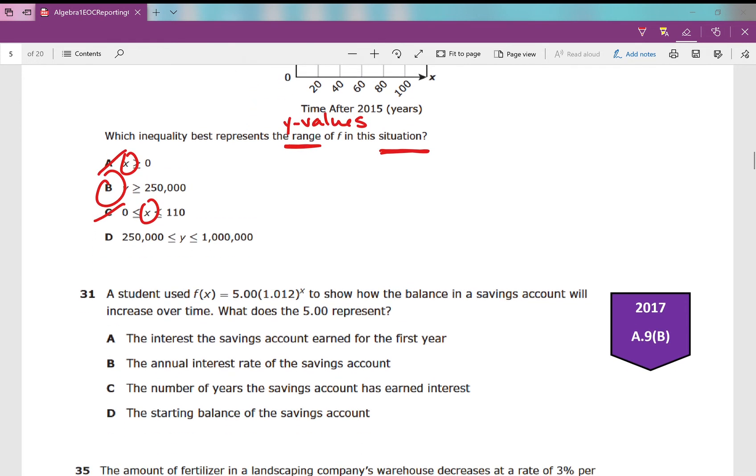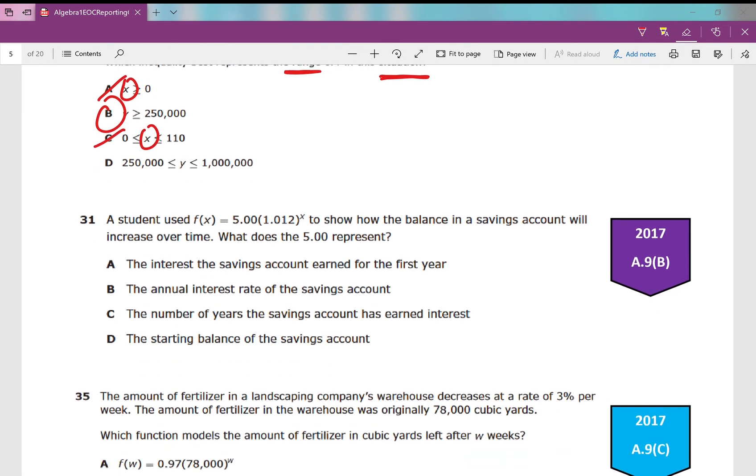Number 31: A student used f of x equals 5 times 1.012 raised to the power of x to show how the balance in a savings account will increase over time. What does 5 represent? That first number in an exponential function is going to be the initial amount. So what are we talking about? The balance in a savings account. When we go through these answer choices: the interest in a saving, no; the annual interest, no; the number of years, no; the starting balance of the savings account—my answer is D.